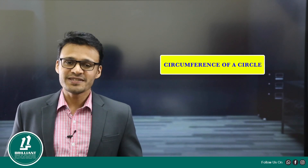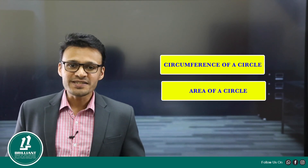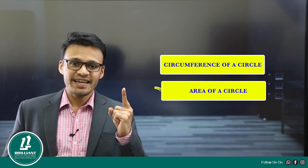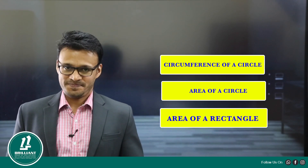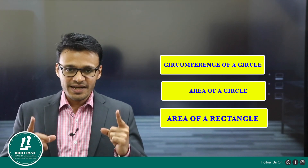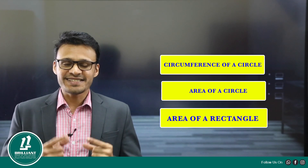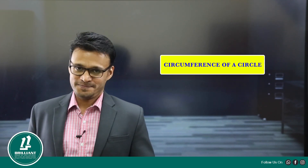Before learning the total surface area of the cylinder, we should know the circumference of a circle, the area of a circle, and the area of a rectangle. Let us see how to find out the circumference of a circle.